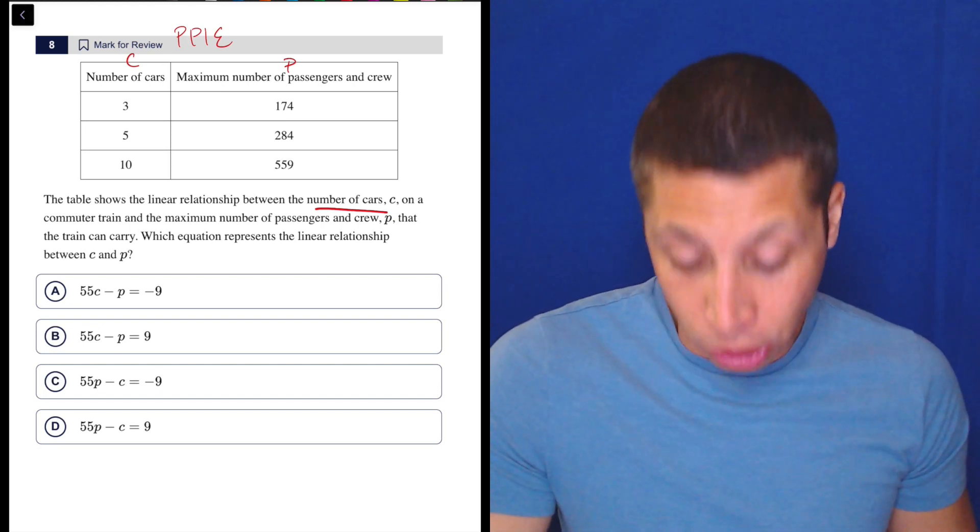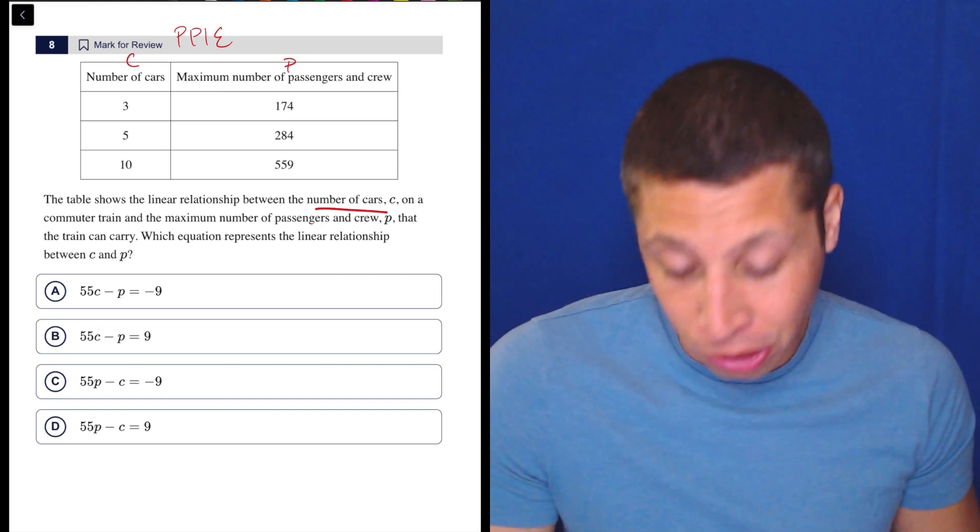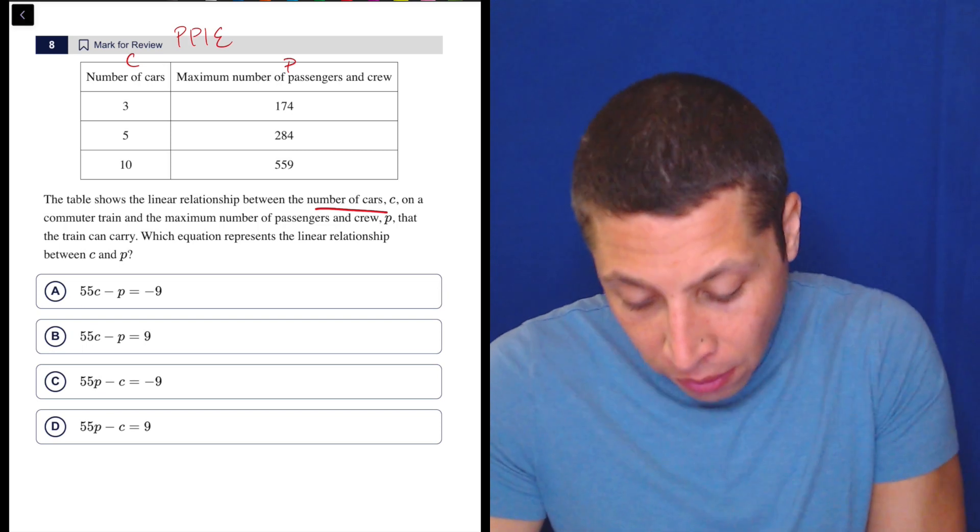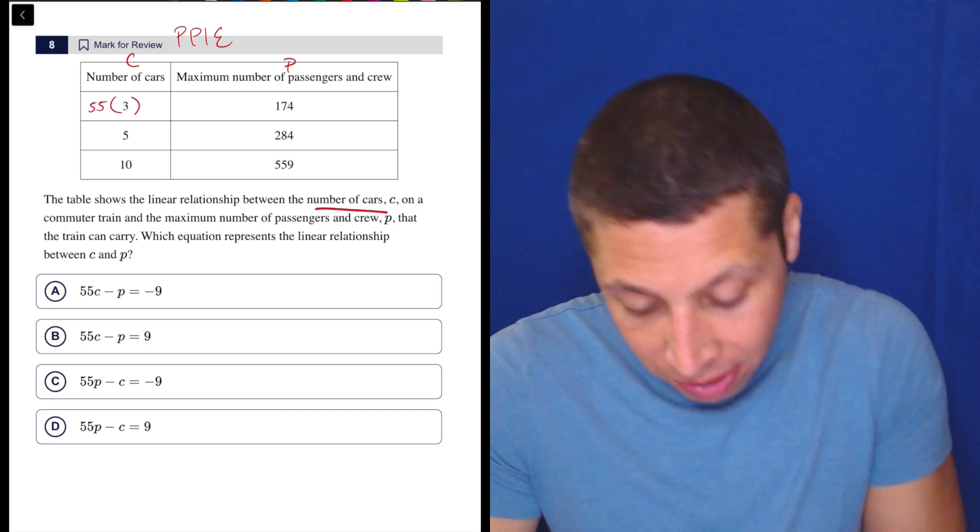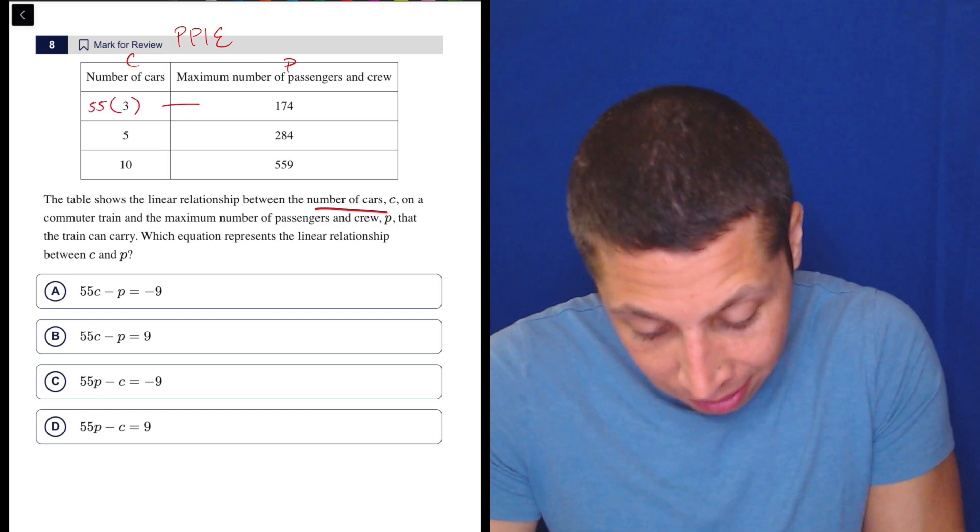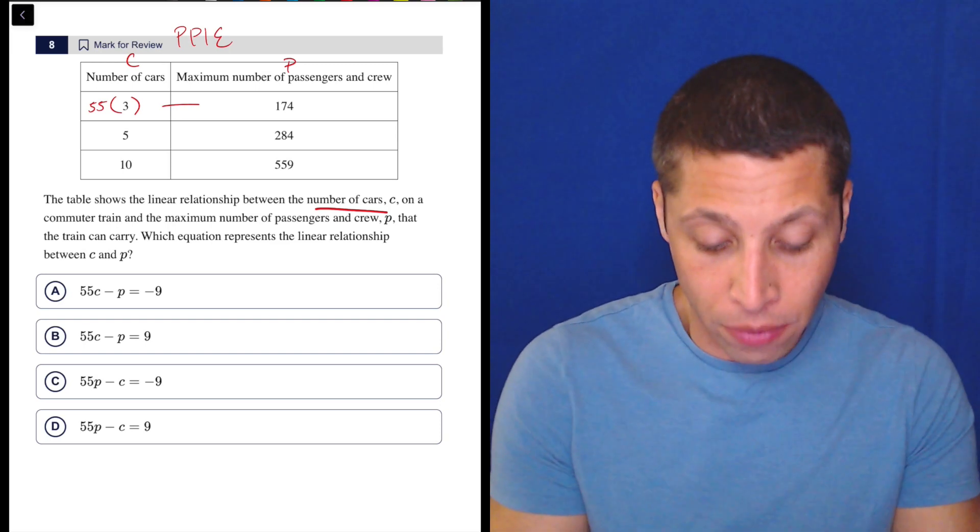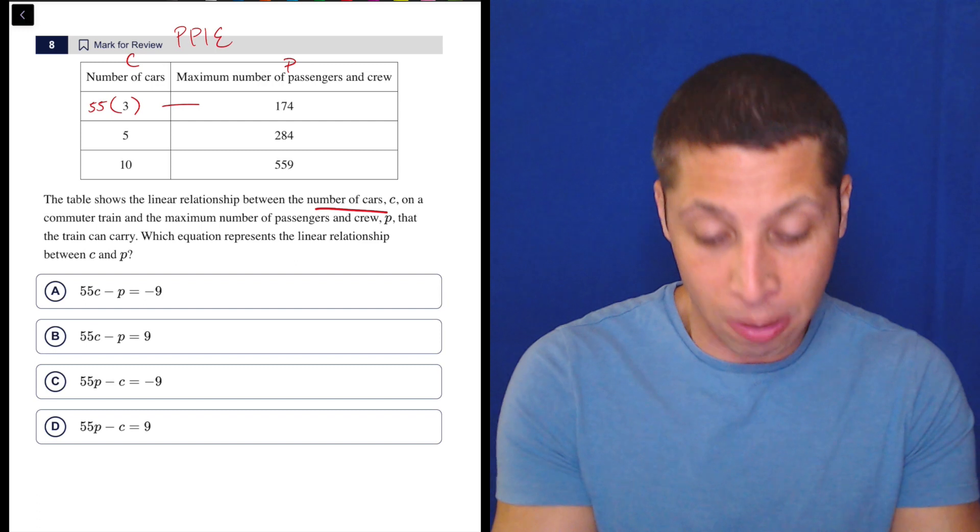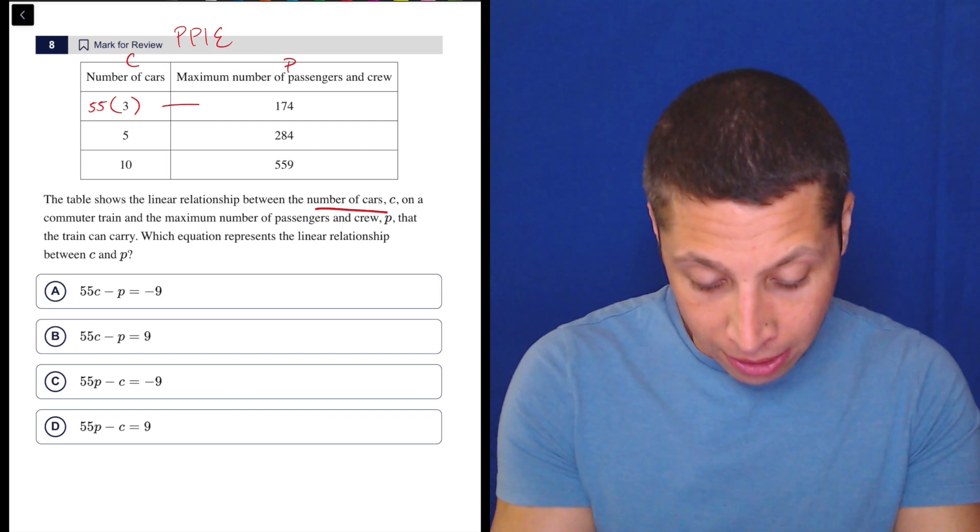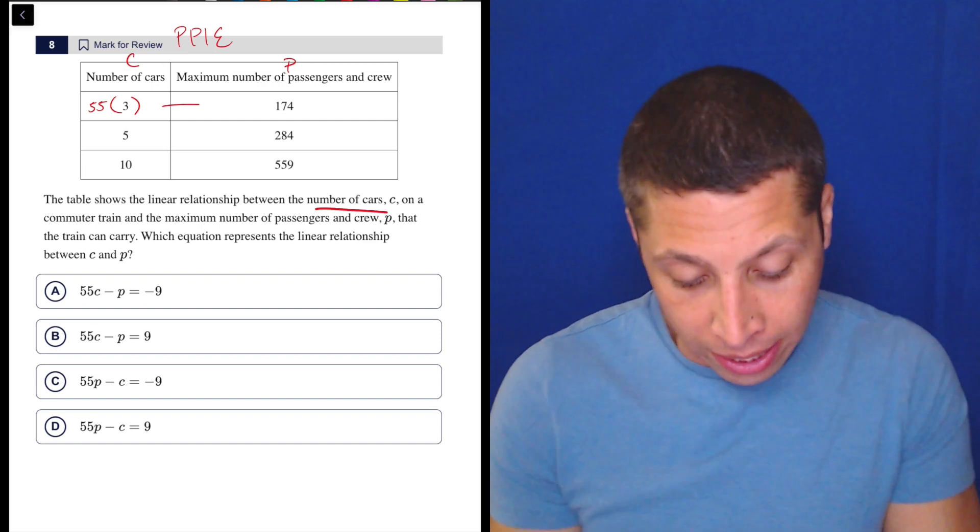Now I'm going to just go down the line. Let's just try choice A because it's most intuitive here. So it's going to be 55 times this number minus 174. So, 55 times 3, regular calculator, I'm not even using Desmos here, minus 174 is negative 9.